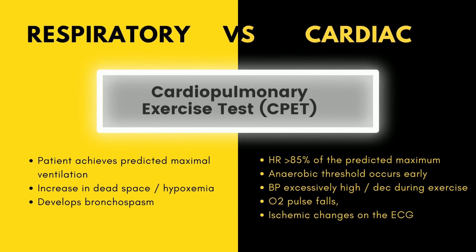If a patient has evidence of both pulmonary and cardiac disease that is not responsive to treatment or it remains unclear what factors are primarily driving dyspnea, a cardiopulmonary exercise test or CPET can be carried out to determine which system is responsible for the exercise limitation. If at peak exercise the patient achieves predicted maximal ventilation, demonstrates an increase in dead space or hypoxemia, or develops bronchospasm, the respiratory system may be the cause of the problem. Alternatively, if the heart rate is greater than 85% of the predicted maximum, if the anaerobic threshold occurs early, if the blood pressure becomes excessively high or decreased during exercise, if the oxygen pools decrease, or if there are ischemic changes on the electrocardiogram, an abnormality in the cardiovascular system is likely the explanation of the breathing discomfort.